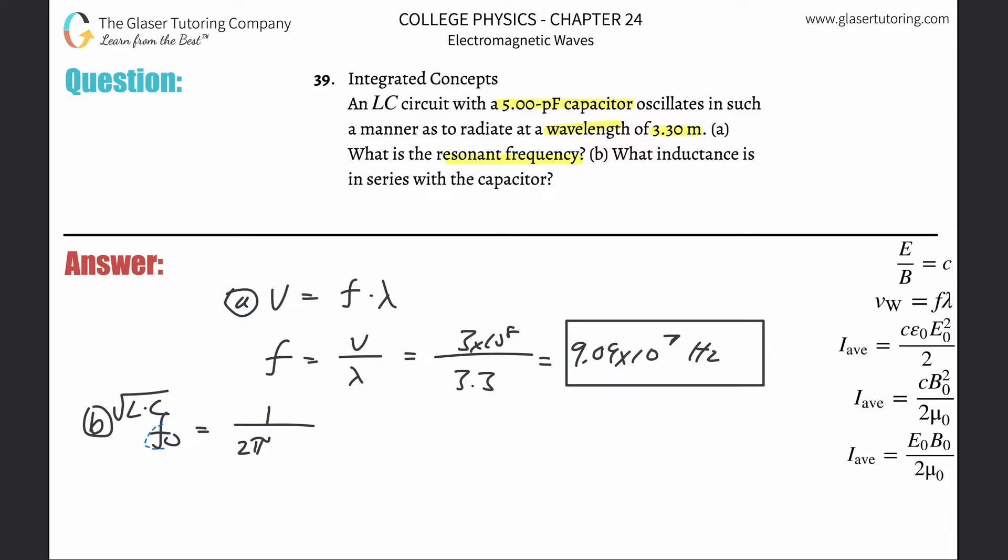So I want to find that inductance, so cross multiply this term over. We got to get rid of the square root, so we got to square both sides, okay? And then once we do that, we got to divide out the capacitance to find L.